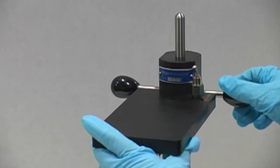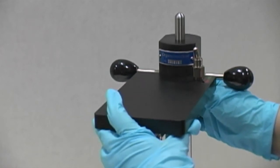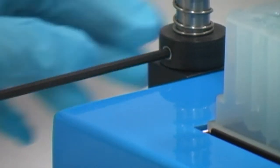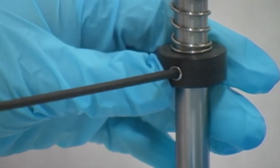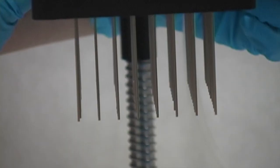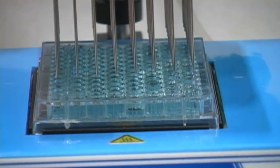Loosen the manifold thumb knobs to adjust the instrument manifold along the rod. Loosen the offset collar thumb knob to adjust the stopping height of the instrument manifold along the rod. Vertically position the manifold 6mm away from the plate.